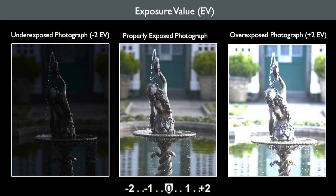Your camera meter bases exposure on ISO, f-stop, and shutter speed, and can be described as your exposure value, or EV. A proper exposure has an even or balanced amount of tones. Tone refers to the levels of brightness in the photograph, from solid black to pure white, and this includes color.